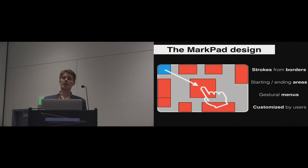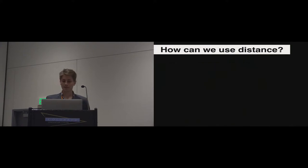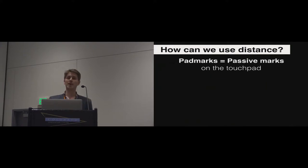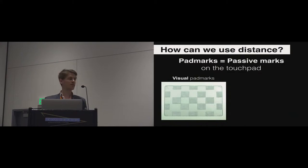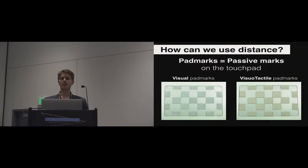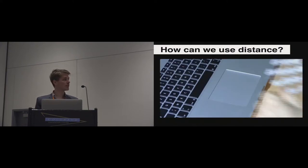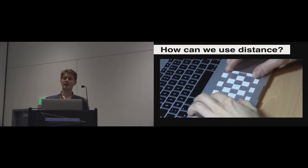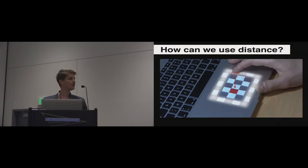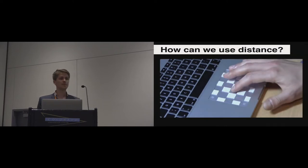You may wonder how we can have a lot of gestures. For that, we propose to use pad marks, which are passive marks on the touchpad, to guide the user to perform a lot of gestures. We use two types of pad marks: first, visual pad marks that the user can only see on the touchpad, or visual-tactile pad marks that the user can feel on the touchpad, providing tactile feedback. A concrete example: the user can just attach pad marks very quickly on the touchpad and then perform a gesture seamlessly.